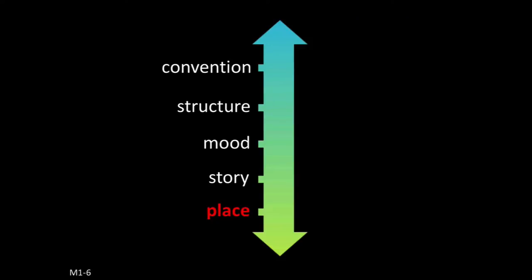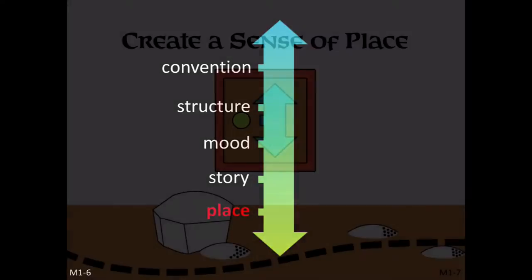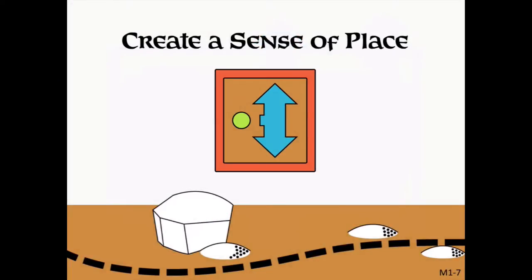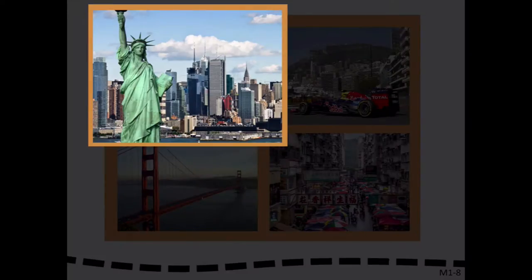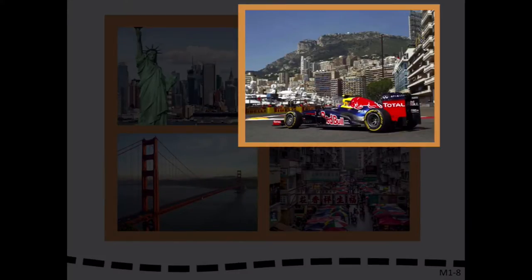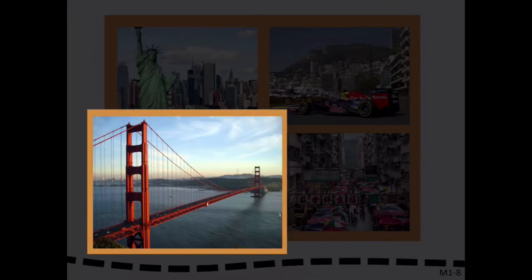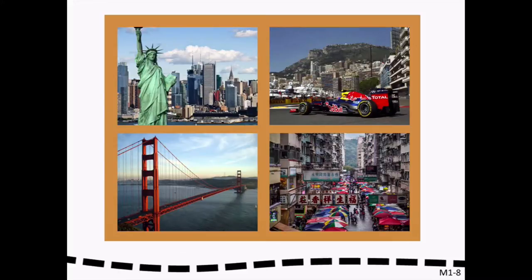Place-themed levels are designed to make a space feel as complete and believable as possible. Examples of this theme occur in games where the environment is a big part of the overall player experience. Often games that are set in recognizable settings require levels built around place themes. Another common use of place-themed levels is simulation-type games. Iconic landmarks like the Statue of Liberty in New York City, the Grand Prix course in Monaco, or the Golden Gate Bridge in San Francisco are universally known. If a level is meant to be highly representative of place, you have to give extra thought to the steps you'll want to take to make that level feel believable.